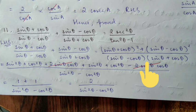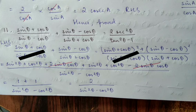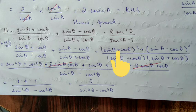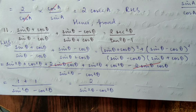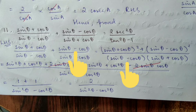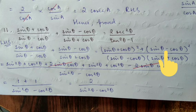For the second fraction in question 11, we apply the same LCM: sin(θ) - cos(θ) times sin(θ) + cos(θ). Dividing by sin(θ) + cos(θ) and canceling gives sin(θ) - cos(θ) in the numerator. Multiplying gives [sin(θ) - cos(θ)]² in the numerator. Now expanding using (a+b)² and (a-b)² formulas: [sin(θ)+cos(θ)]² gives sin²+2sin·cos+cos², and [sin(θ)-cos(θ)]² gives sin²-2sin·cos+cos². The ±2sin·cos terms cancel.